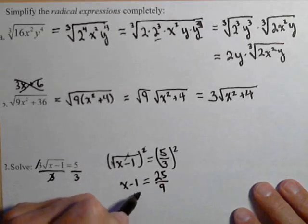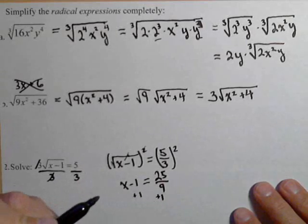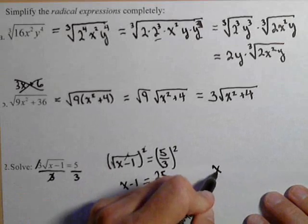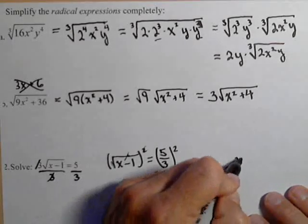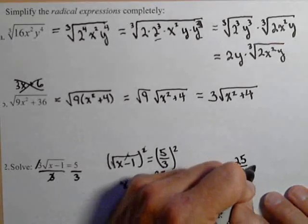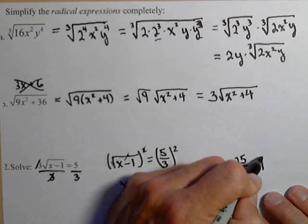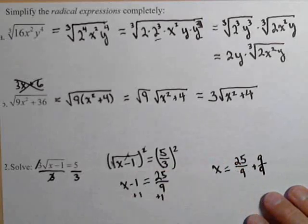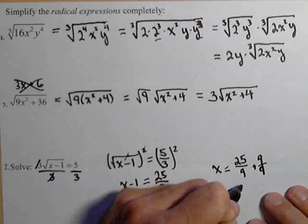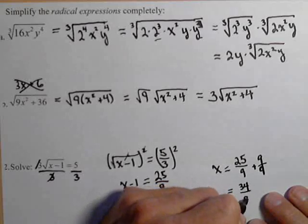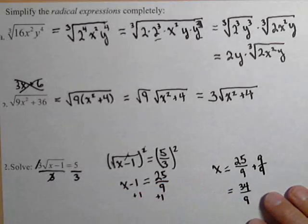And then our last step is to add 1 to both sides. So we're going to get x equals 25 ninths plus 1, which is 9 ninths. So we get 34 over 9, and we're done.